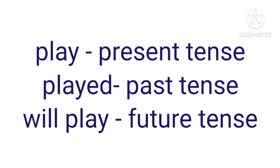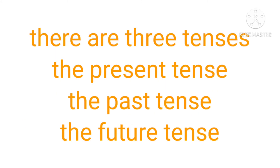In the same way: They play cricket — 'play' is present tense. They played cricket — 'played' is past tense. They will play cricket — 'will play' is future tense. So there are three tenses: the present tense, the past tense, and the future tense.